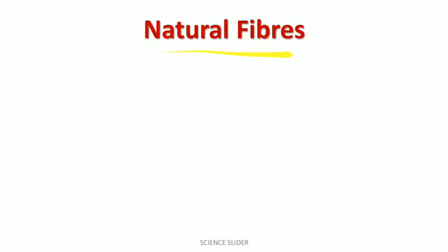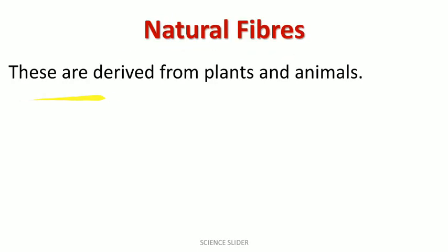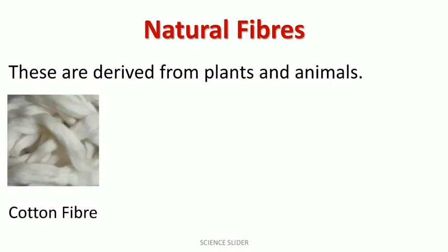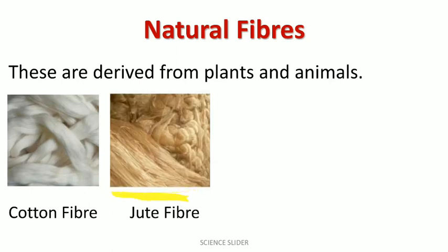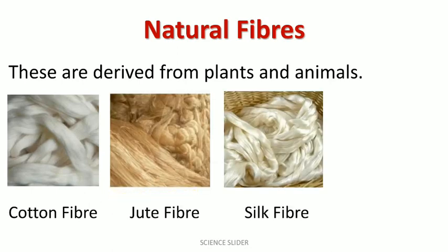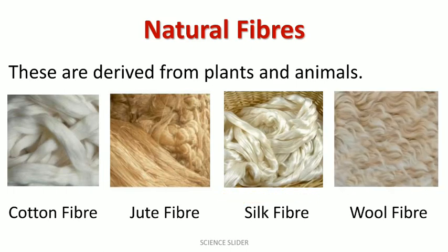Watch here — natural fibers are derived from plants and animals. Examples of natural fibers include cotton fiber and jute fiber, which come from plants, and silk fiber and wool fiber, which come from animals.